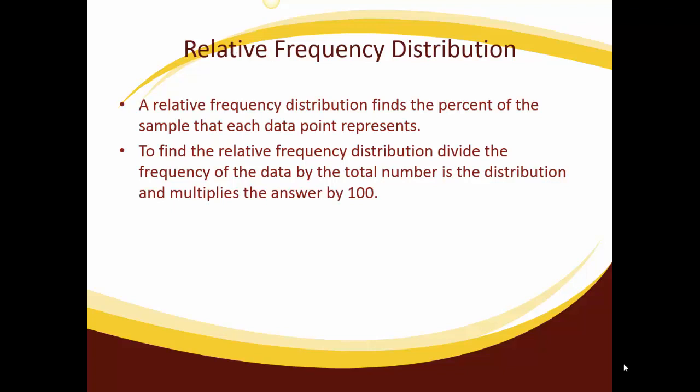A relative frequency distribution finds the percent of the sample that each data point represents. To find the relative frequency distribution, divide the frequency of the data by the total number in the distribution and then multiply the answer by 100.